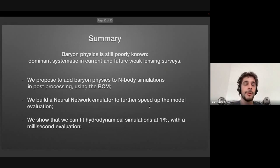baryonic physics is poorly known, and this is the dominant systematics expected in current and future weak lensing surveys. So we proposed here to model it with the baryon correction model. This could be applied in post-processing of gravitational simulations, and then to train neural network emulators in order to speed up by orders of magnitude the analysis of the pipeline. And we see that this method is very fast. This is millisecond evaluation for one model and still accurate enough to fit at percent level the very expensive hydrodynamical simulations. And thank you for the attention. And if you have any question, I'd be glad to answer.